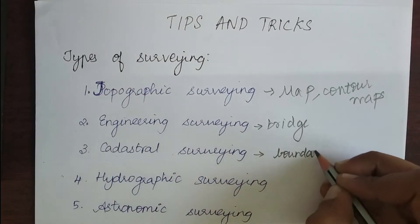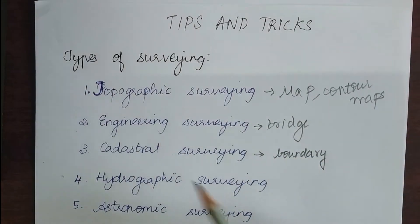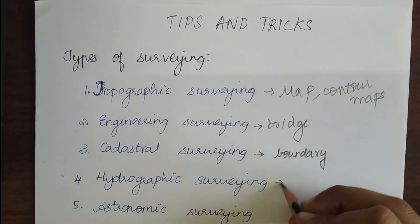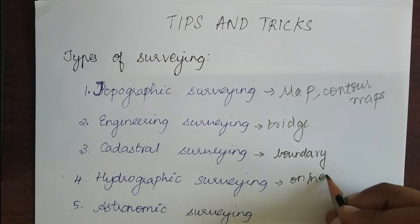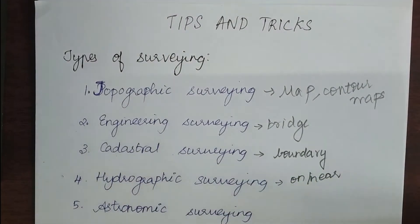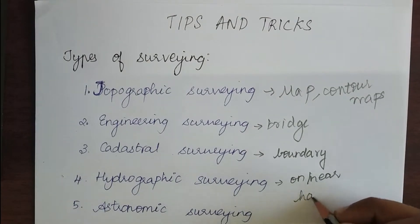Cadastral surveying is used to find the boundary of a property. Next is hydrographic survey. This type of surveying is done on or near a water body and is used in the construction of harbors and other marine structures.